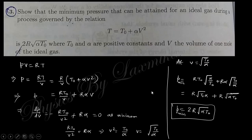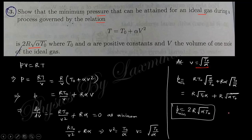The next question asks for the minimum pressure attainable for an ideal gas during a process governed by a given relation. Since pV = RT, p = RT/V. Writing T in terms of the given process relation, p becomes a function of V. To find minimum pressure, set dp/dV = 0 to get the value of V, then substitute back to find the minimum pressure.